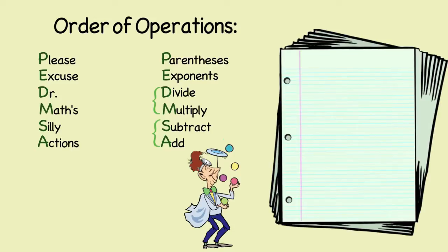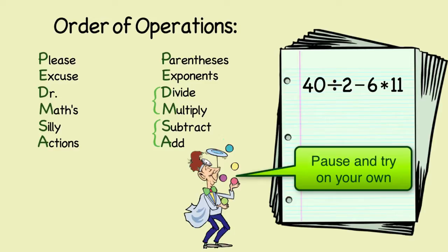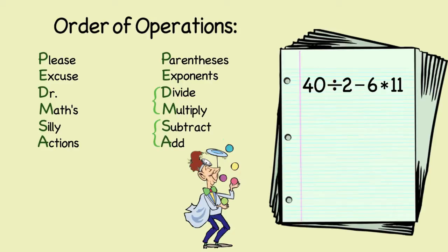So let's try solving the problem 40 divided by 2 minus 6 times 11. Pause the video and try to solve it on your own. After you've got an answer, unpause the video, and we'll go over it. Since we don't have parentheses or exponents, the first step would be to divide and multiply from left to right. So 40 divided by 2 is 20, and then we'd multiply 6 times 11, giving us 66. So now we have 20 minus 66, or negative 46.